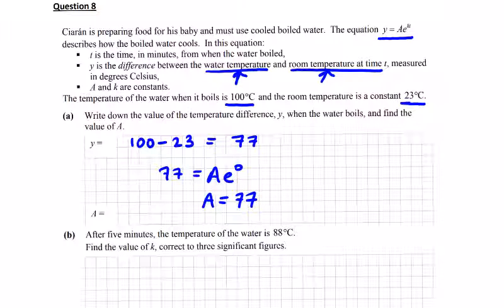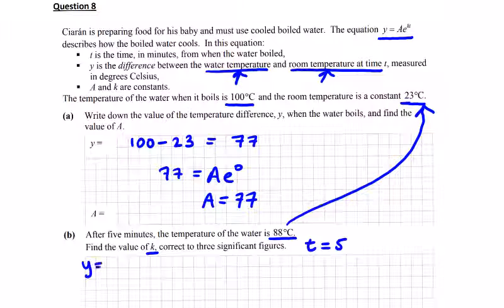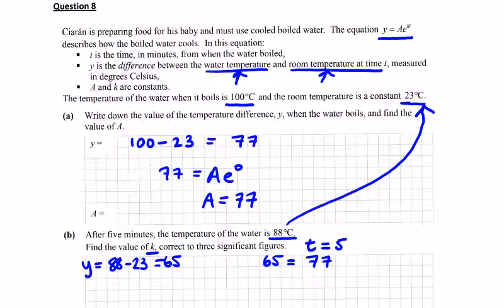After 5 minutes, we're told the temperature is 88, so T is equal to 5. And we're asked to find the value of k. So just set up your equation. So water temperature is 88, room temperature is 23. So Y is equal to 88 minus 23, as above, which is 65. So setting up our equation, we're going to get 65 is equal to A, 77E to the power of k times 5. So k is the only unknown here.